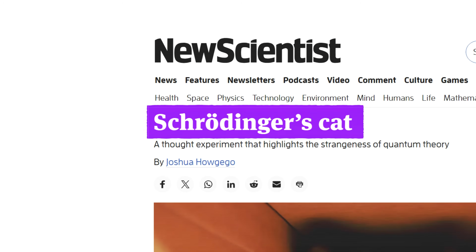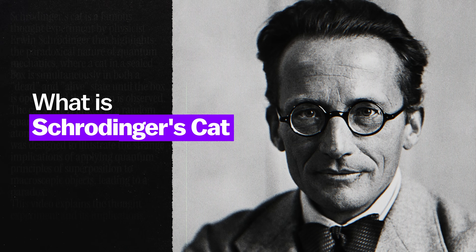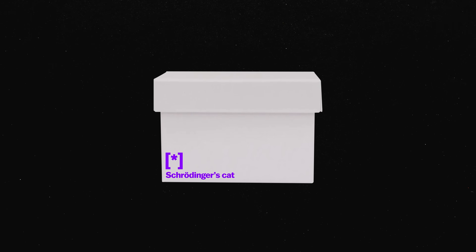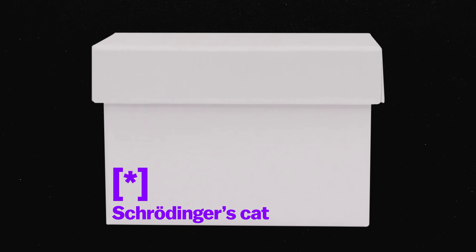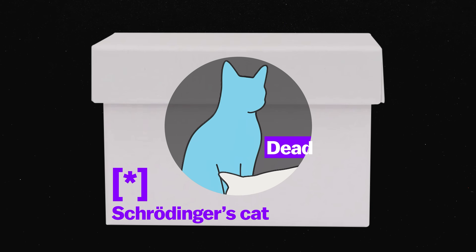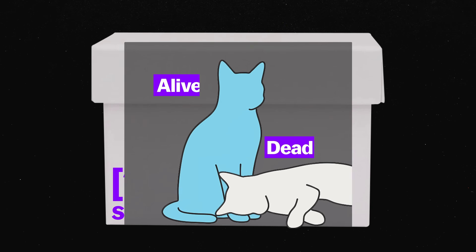You might have heard about Schrödinger's cat. To summarize it very briefly, it's a paradox in which, due to quantum mechanics, a cat inside a box could be both dead and alive at the same time. This thought experiment is confusing on its own, but probably even more so to computer scientists. Let me explain.